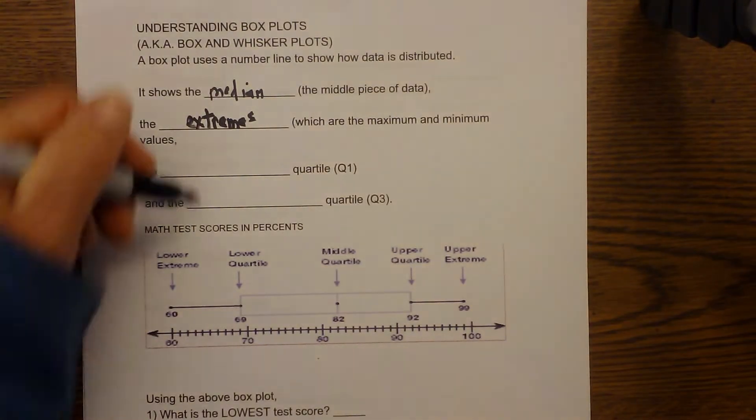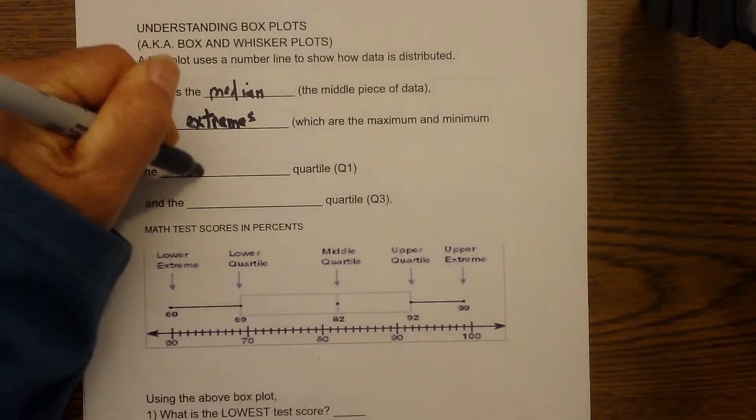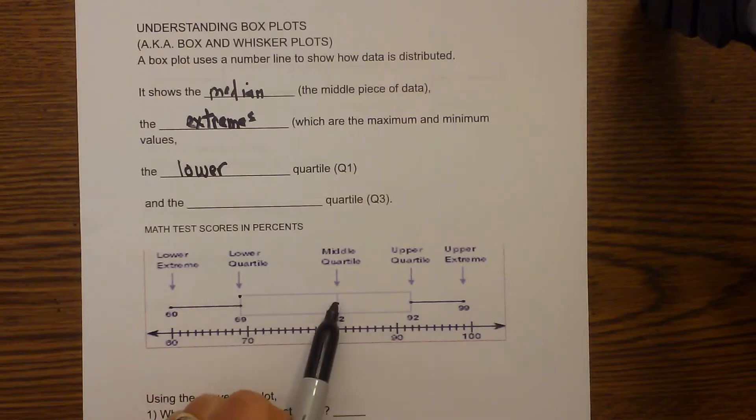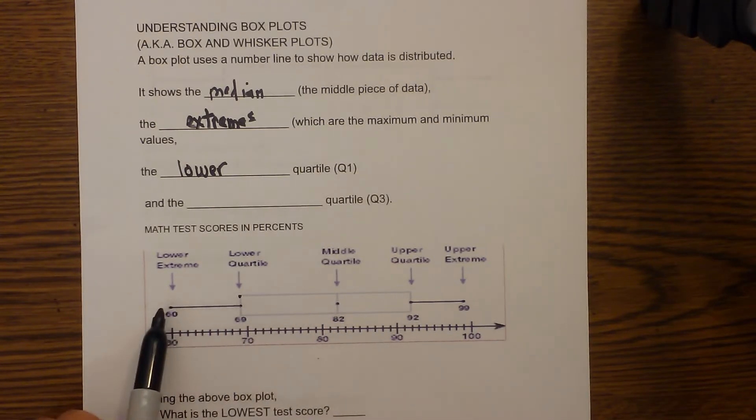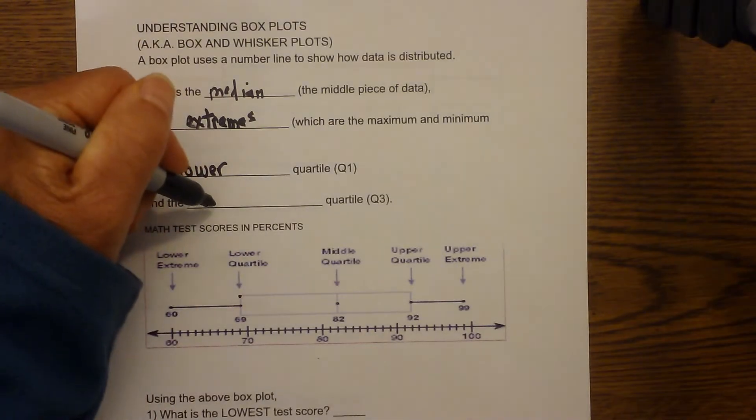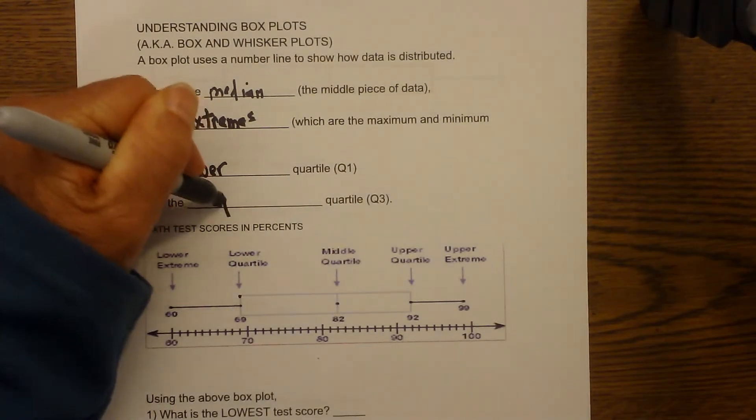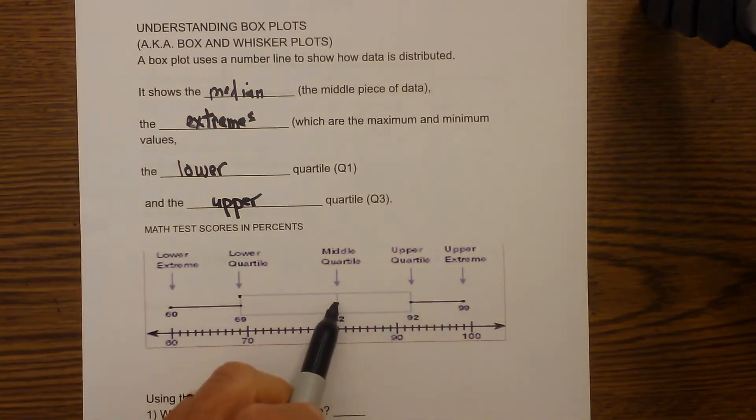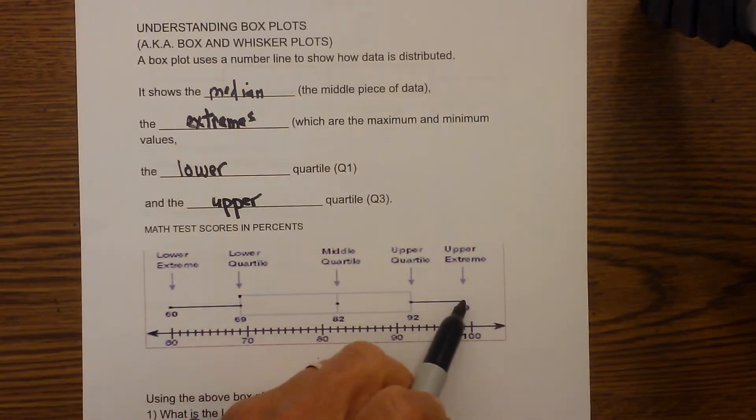Next you have the lower quartile. What the lower quartile is, and it's right here, is the median of the lower set of data. So it's the data between 82 and 60. And then it tells you the upper quartile, and that is the median between 82 and 99.